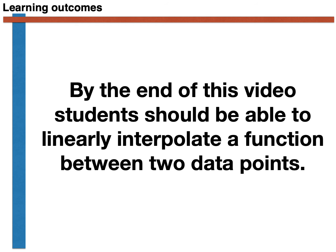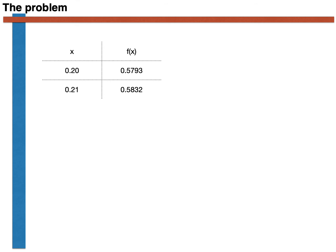Let's start our exploration of this topic by introducing a problem that we can solve using linear interpolation. We will suppose that we have been given the information in the following table about the function f. In other words, we have been told that when x is equal to 0.2, f is equal to 0.5793, and that when x is equal to 0.21, f equals 0.5832.